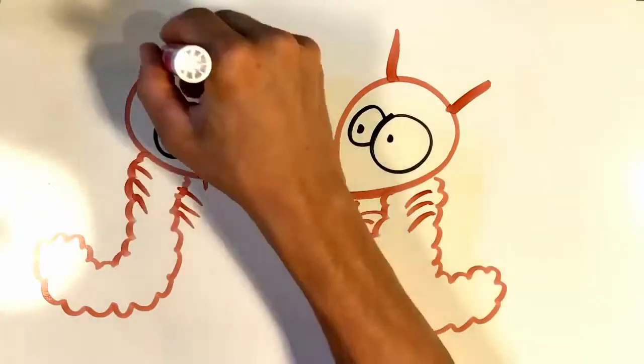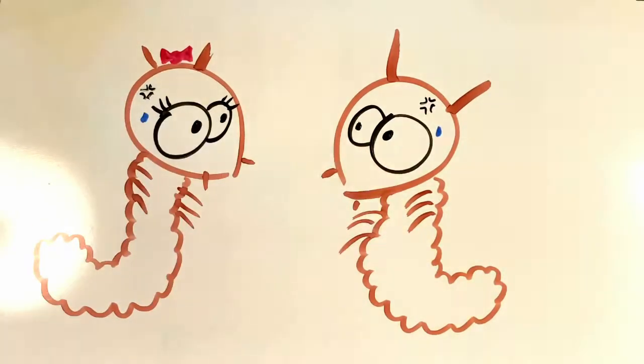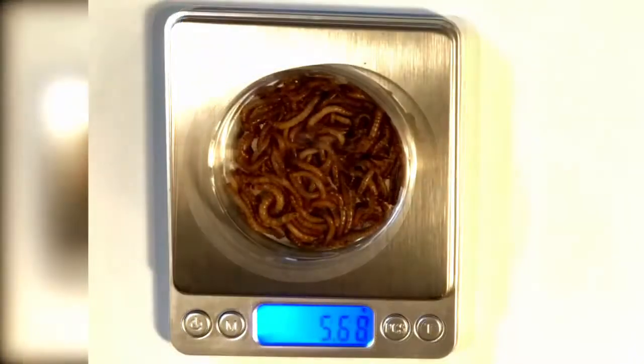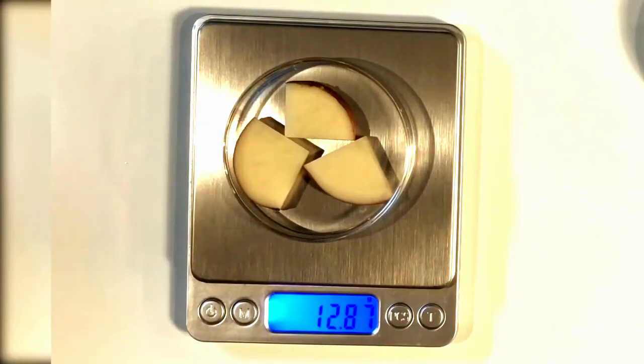In our last video, we explored what happens when mealworms, an animal, eat food. And we observed that when the mealworms ate potatoes, the mealworms gained mass, while the potatoes lost mass.